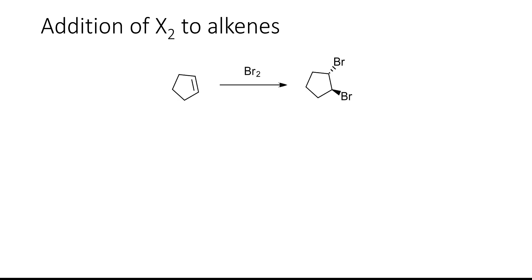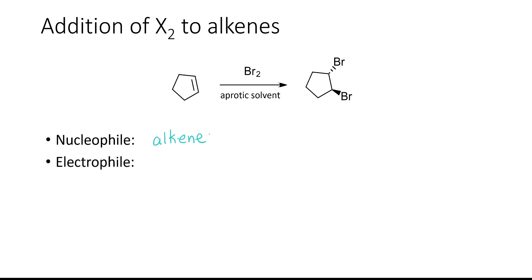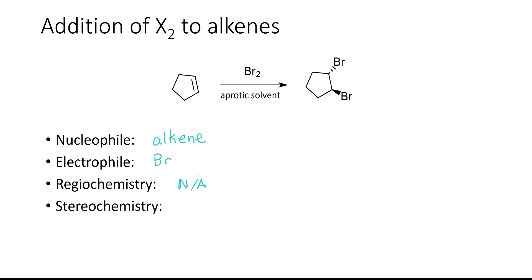In this example we have cyclopentene reacting with bromine. When this reaction is carried out in an aprotic solvent the product is dibromocyclopentene. As in previous reactions the nucleophile in this reaction is the alkene, and the electrophile is the bromine atom. The regiochemistry for this reaction doesn't matter because we're adding symmetrical substituents. The stereochemistry however does matter, and the two halogen atoms add in an anti fashion. The mechanism proceeds through a cyclic bromine ion.